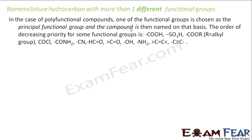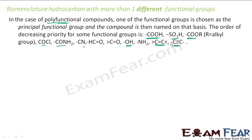In the case of poly-functional compounds which have more than one functional groups — for example, a compound with both alcohol and aldehyde — there is a priority order for choosing which is the principal functional group. COOH is the highest priority, then SO3H, then COR (where R is an alkyl group), then COCl and CONR2, then CN, then COH (aldehyde), then OH (alcohol). Double bond and triple bond are almost at the lowest priority.